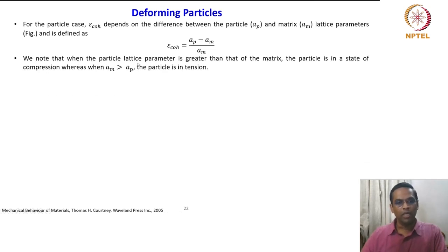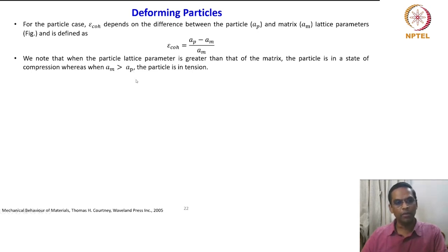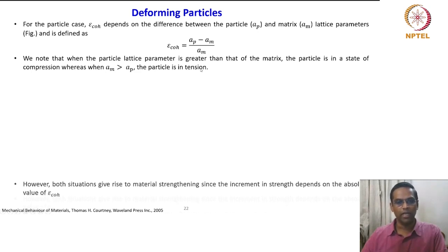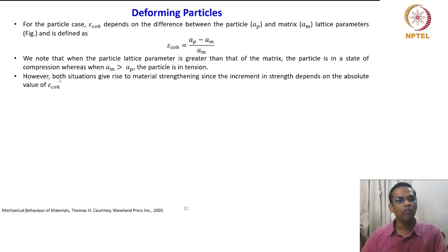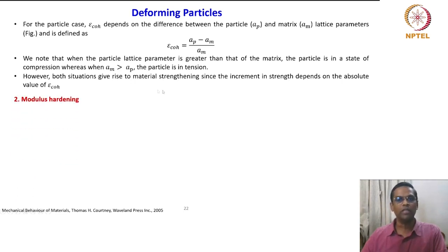We note that when the particle lattice parameter is greater than that of the matrix, the particle is in a state of compression. Whereas when A_m is greater than A_p, the particle is in tension. Both situations give rise to material strengthening since the increment in strength depends upon the absolute value of epsilon coherent — that is why we use mod of epsilon coherent in the previous expression.